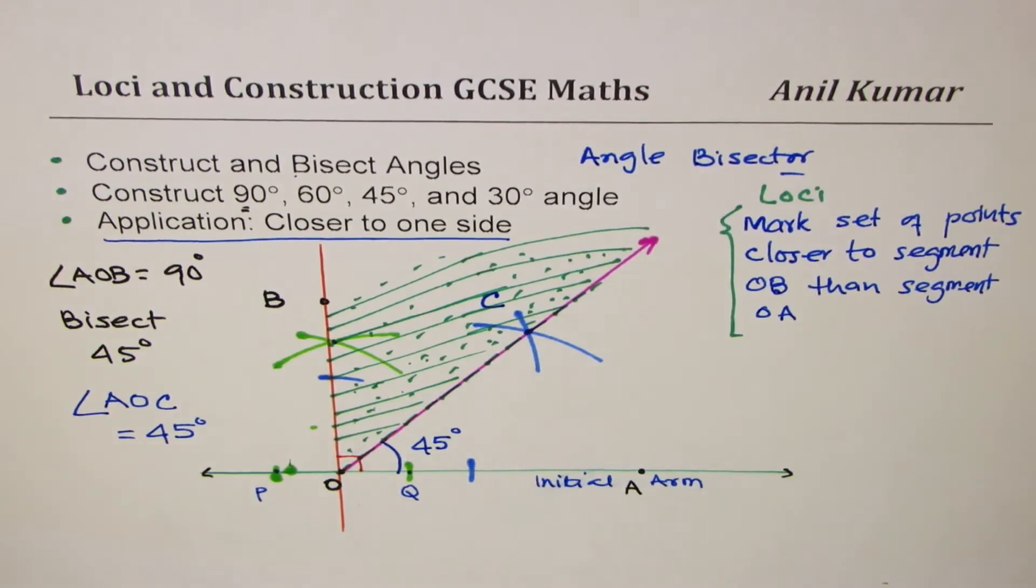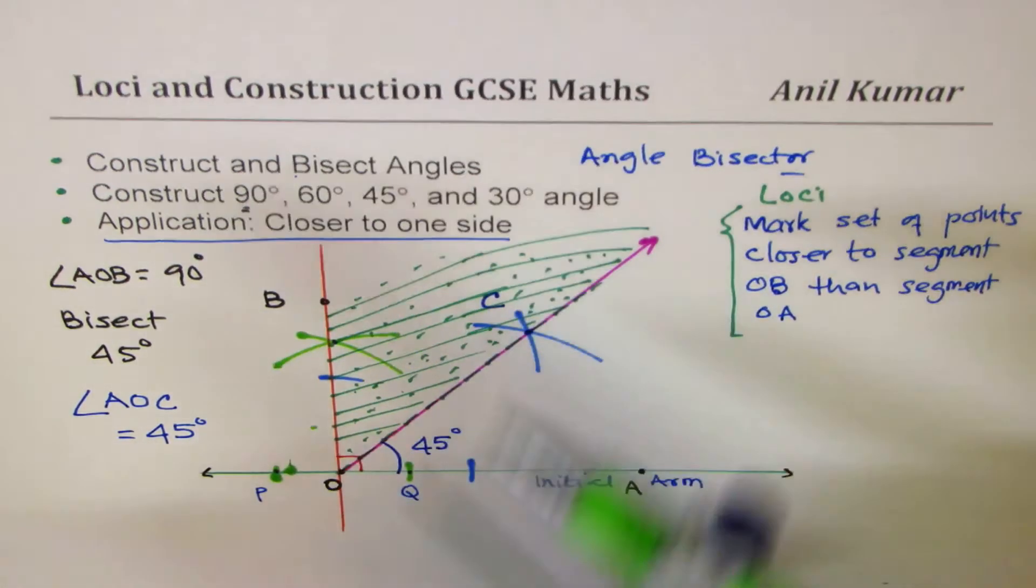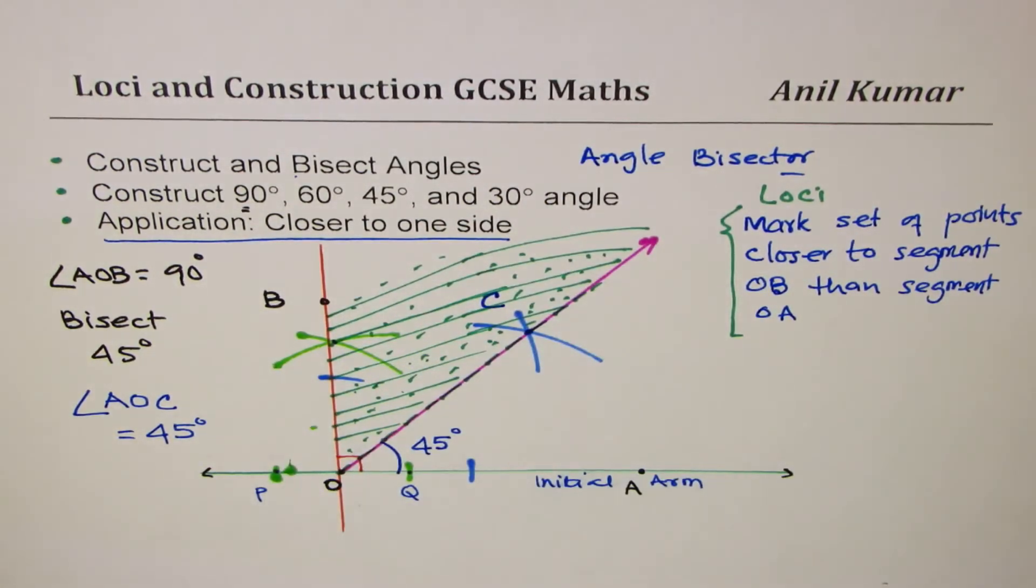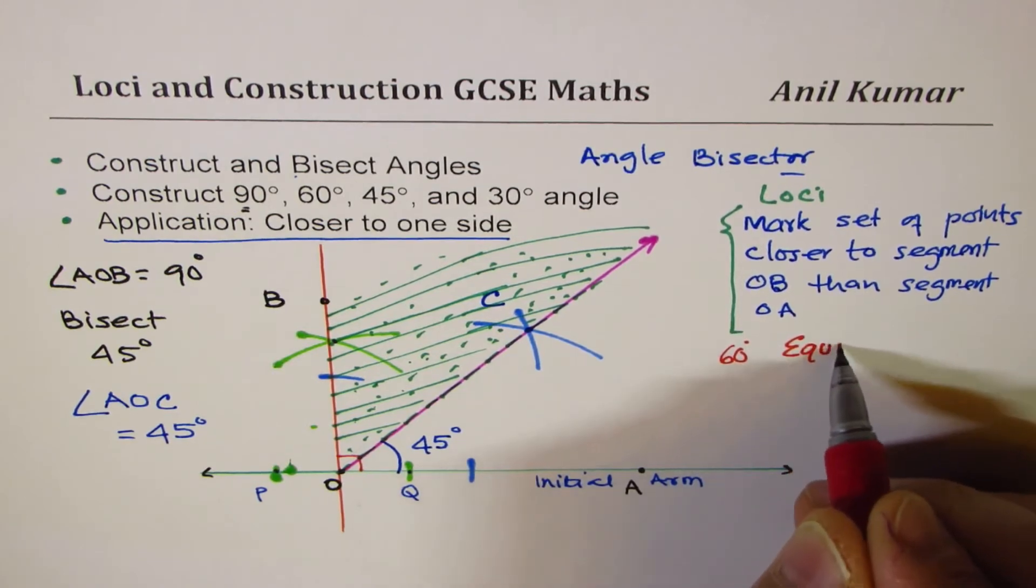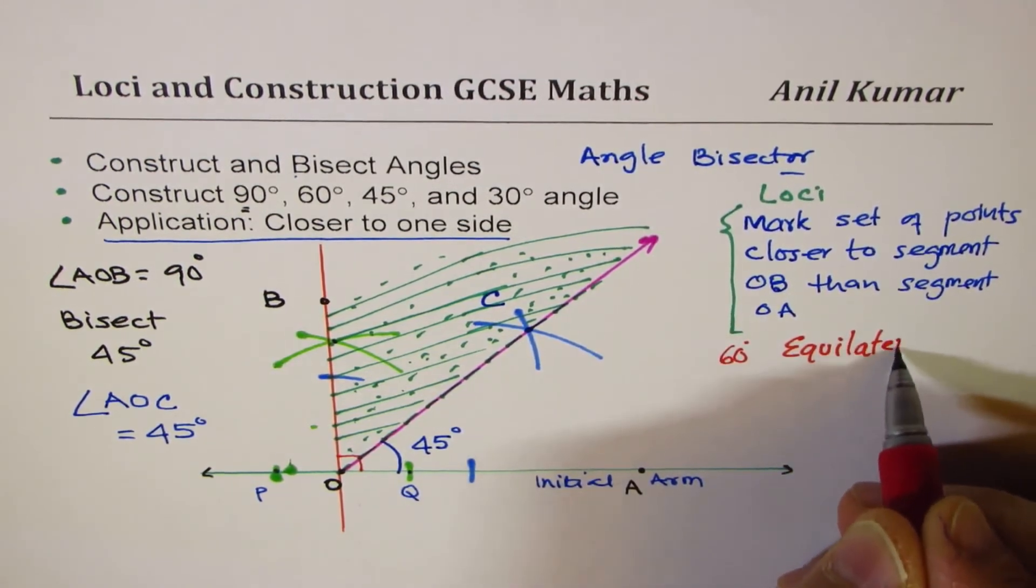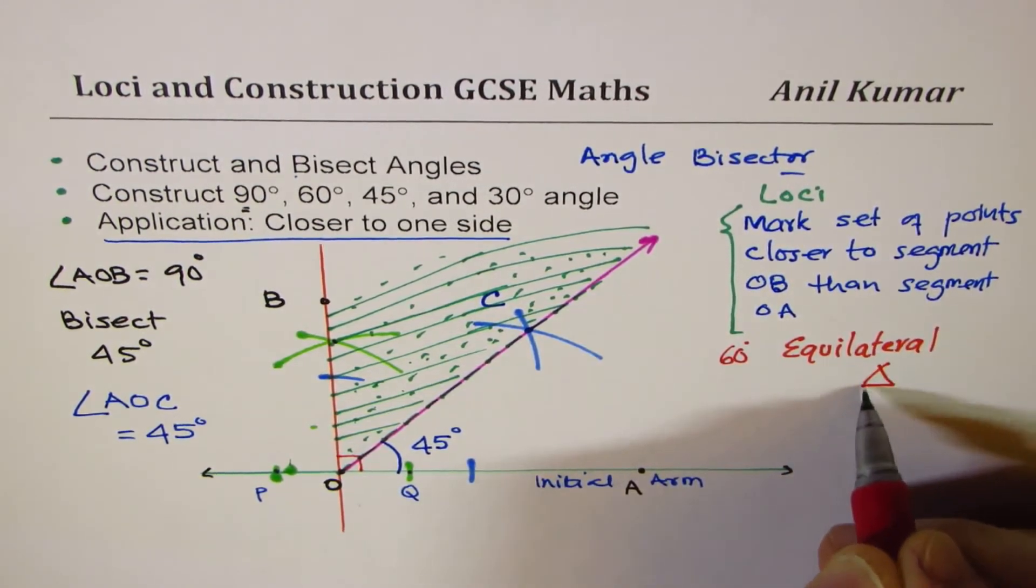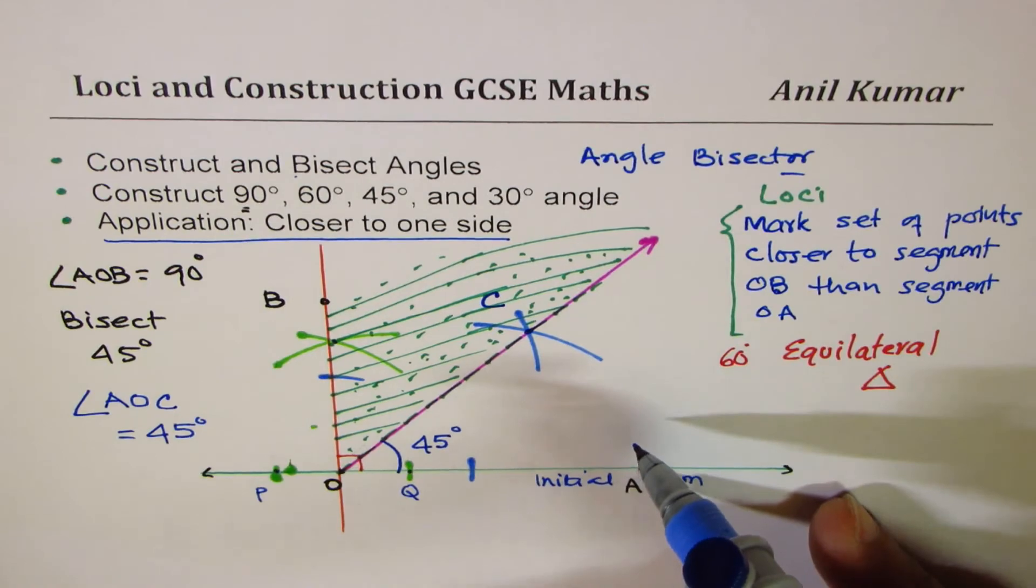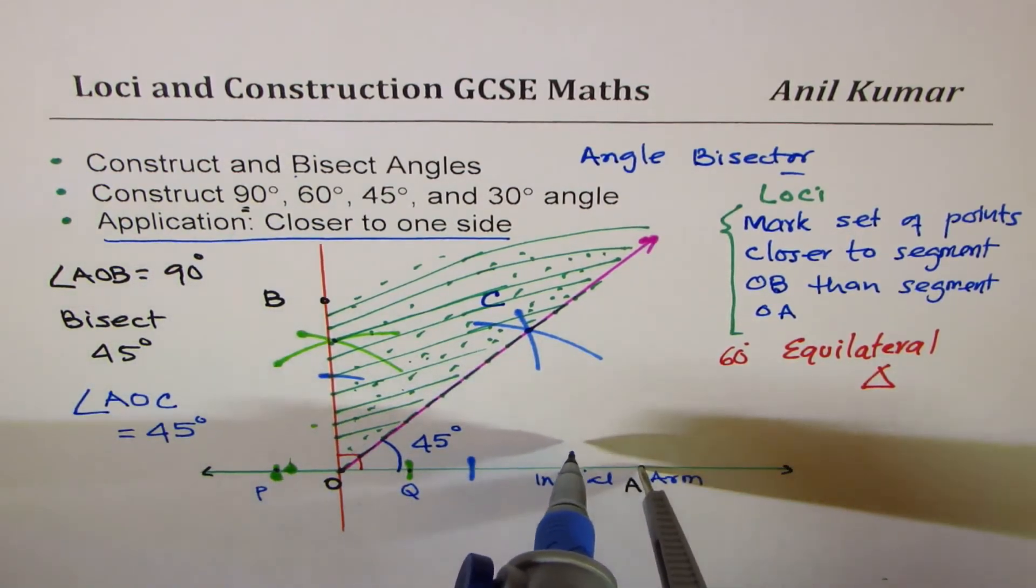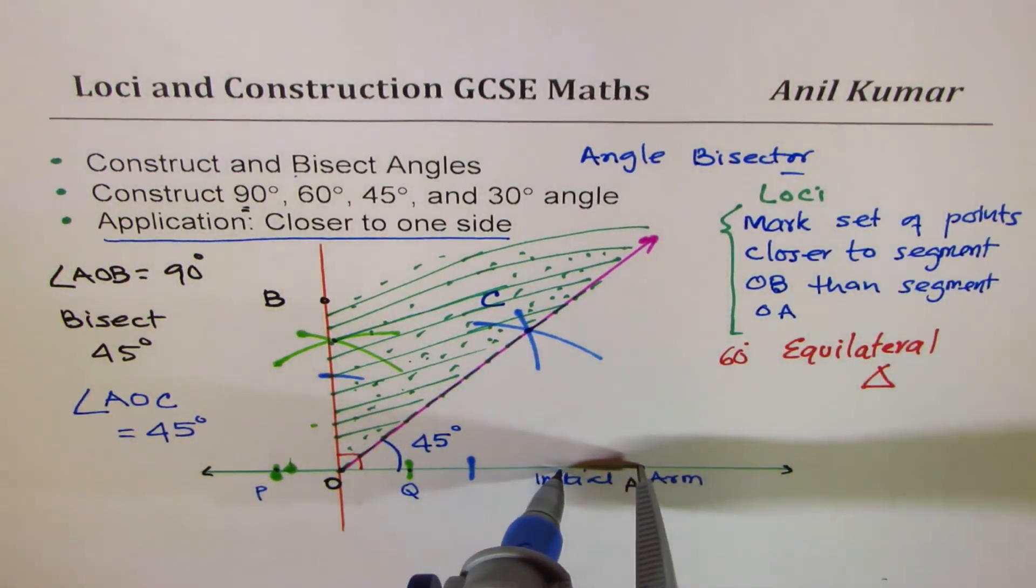Now let us see how to construct 60 degrees and 30 degrees. Well, the concept of 60 degrees is equilateral triangle. That is the concept. Now keep that in mind and see how do we construct it. So what we do now here is that place the compass at A and just mark an arc like a circle around it.